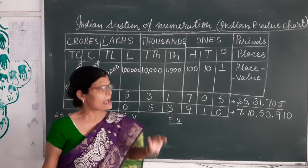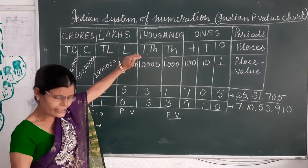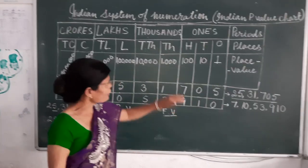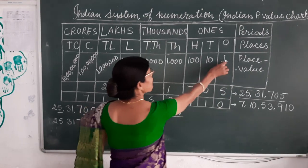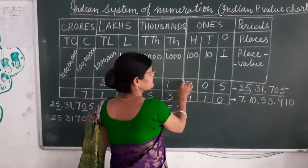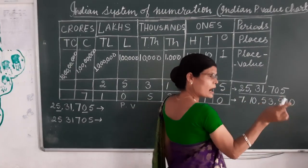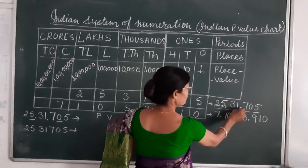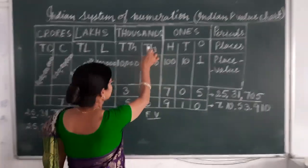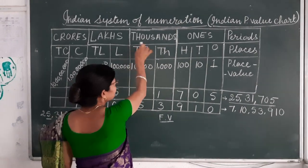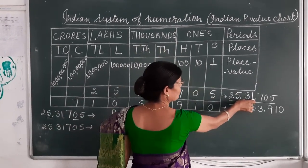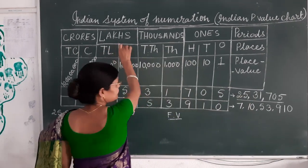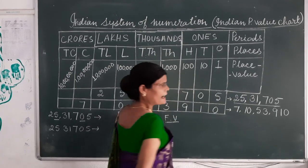That is why we will put the comma according to the Indian system of numeration. According to place, we will put the comma. Ones, Tens, Hundreds — there are 3 digits in the Ones group. That is why we will put the comma after 3 digits from the right side: 1, 2, 3 — comma here. And again, Thousands and Ten Thousands — there are 2 places in the Thousands group, so we will put the comma after 2 more digits: 1 and 3 — comma here. Similarly, 2 more digits and we put the comma.